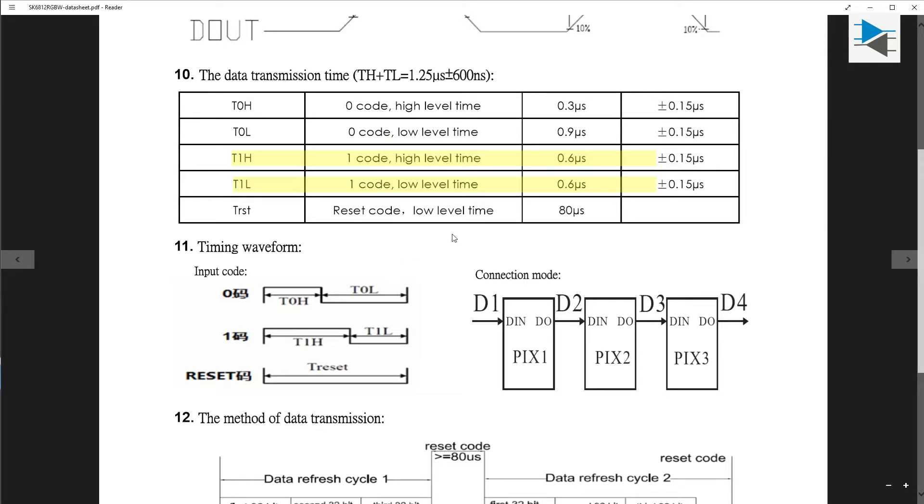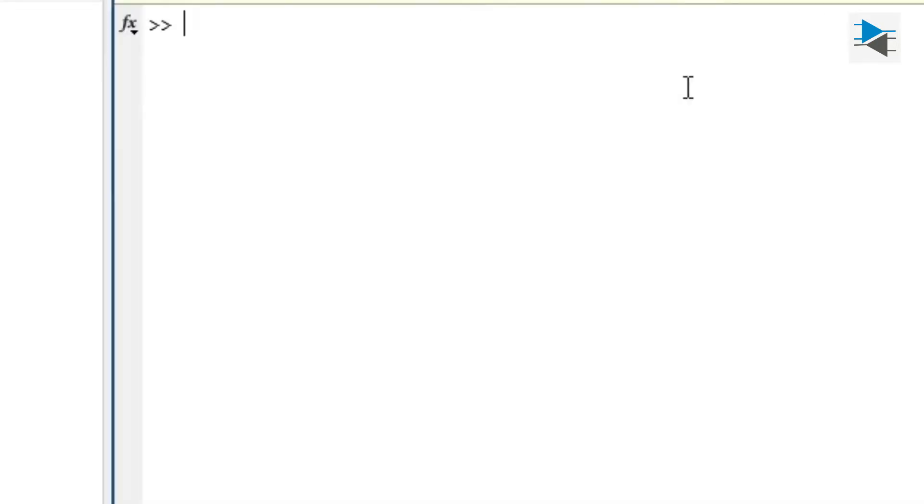This should be easy to generate using a function generator. We double-check the frequency by first adding together the high and low time of 0.6 microseconds, and this gives us 1.2 microseconds for the period. To calculate the frequency, we just have to take the inverse of the period. It is always a good idea to do the calculation in base units, so in this case, 1.2 microseconds equals 1.2 times 10 to the minus 6 seconds. This gives us 8.3 times 10 to the 5 Hertz.